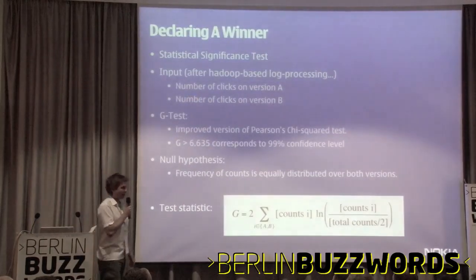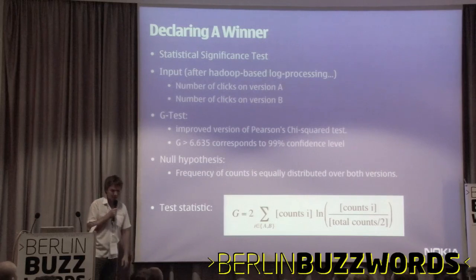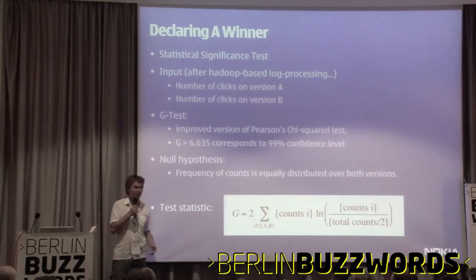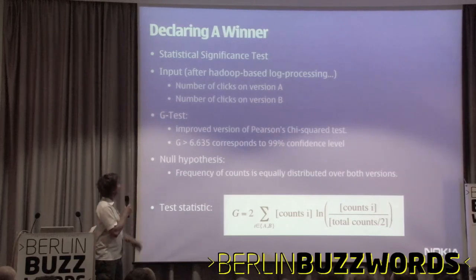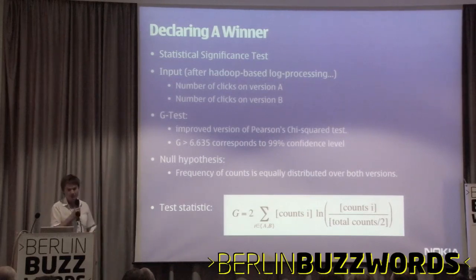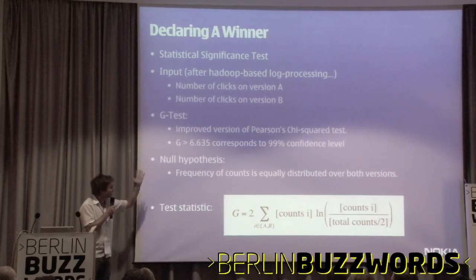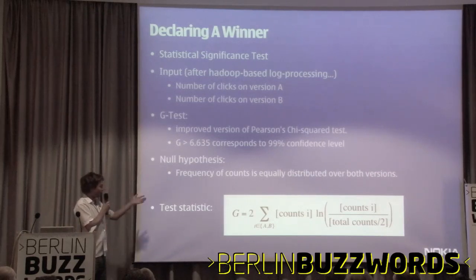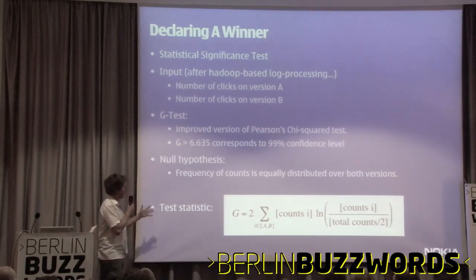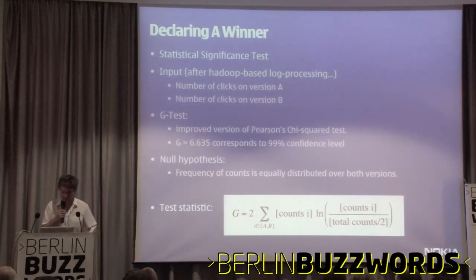Once you have that, how can you declare a winner? You do statistical significance tests. The input to the tests are the number of clicks on version A and the number of clicks on version B. For extracting those, you do log processing — we have our stack of search analytics Hadoop scripts that help us there. There's a statistical test called the g-test, which is an improved version of Pearson's chi-square test. A level of about 6.6 of g corresponds to 99% confidence. The null hypothesis you're trying to reject is that the frequency of counts is equally distributed over both versions. You plug in your counts into the formula and get a value for g, then you can say which of the two versions wins. Very simple.